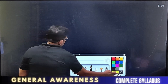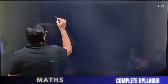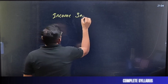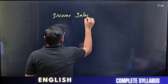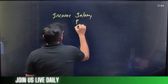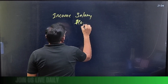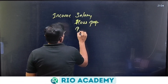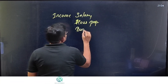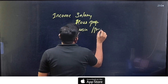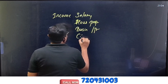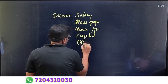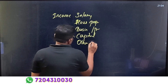What are the heads of gross total income? Income from salary, house property, income from business or profession, capital gain, and other sources.